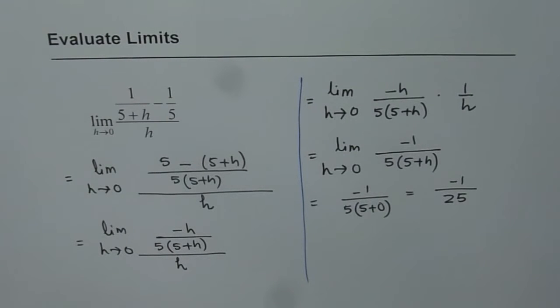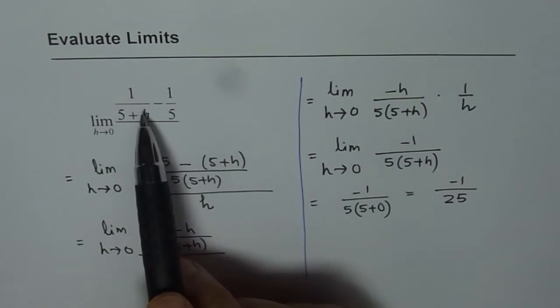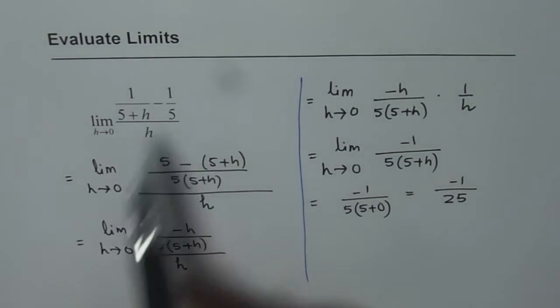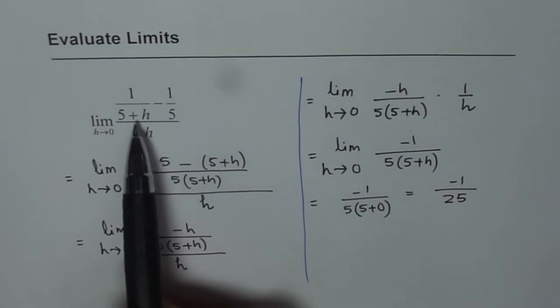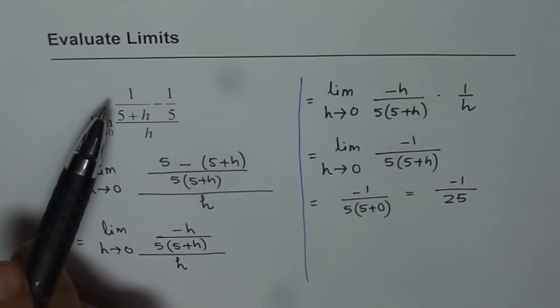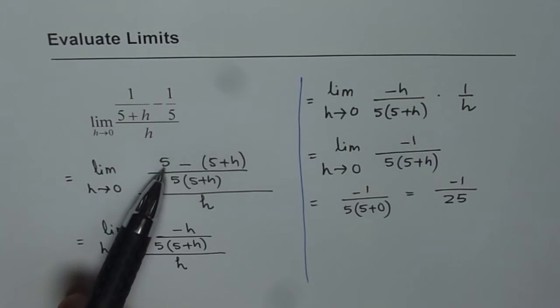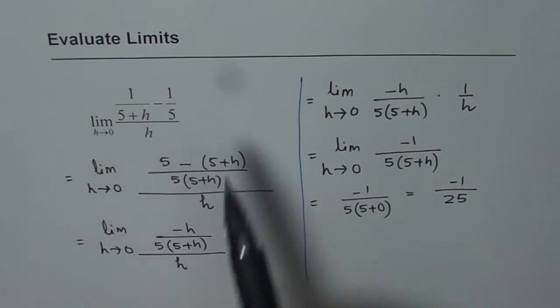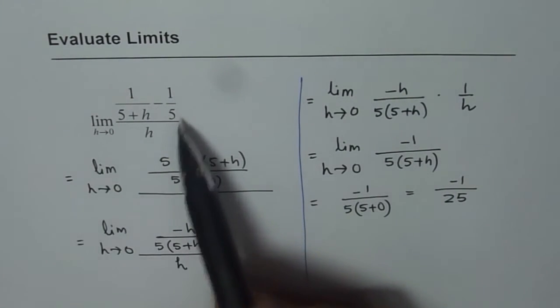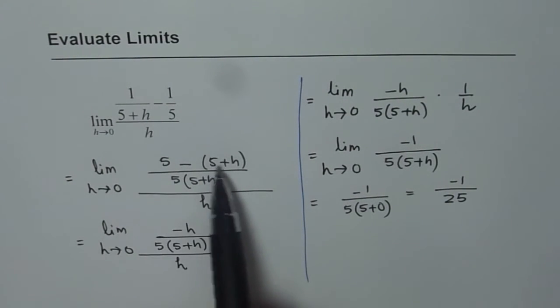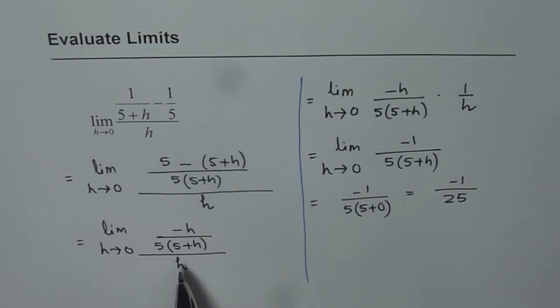I hope the steps are very clear. When you do this subtraction, you should have a common denominator. To find a common denominator, we multiplied the first term by 5, so you get 5 in the numerator and denominator. In the second term, we multiplied both numerator and denominator by (5+h). And then you simplify.